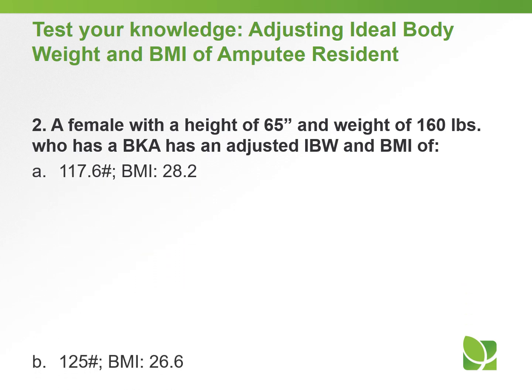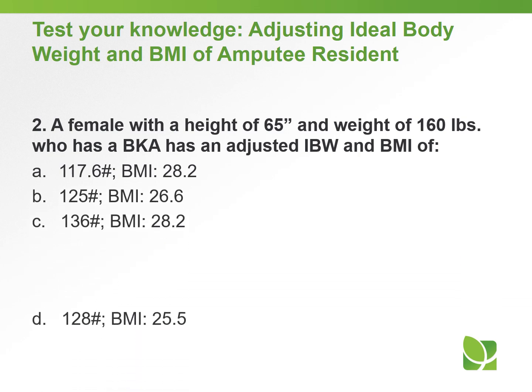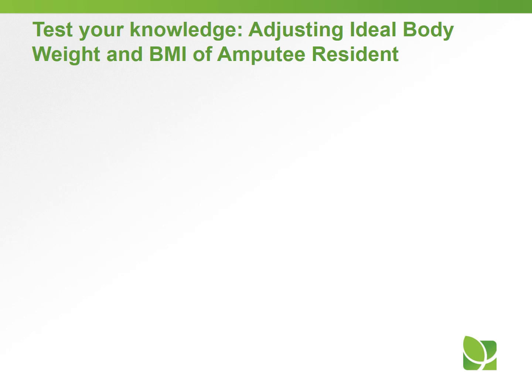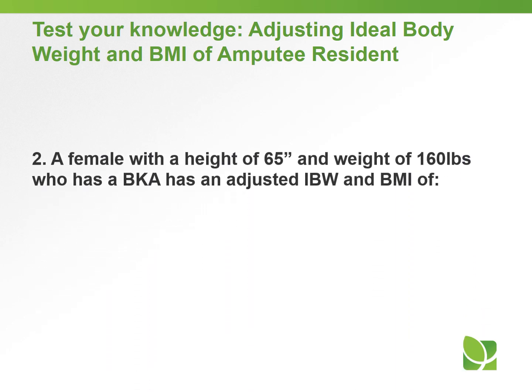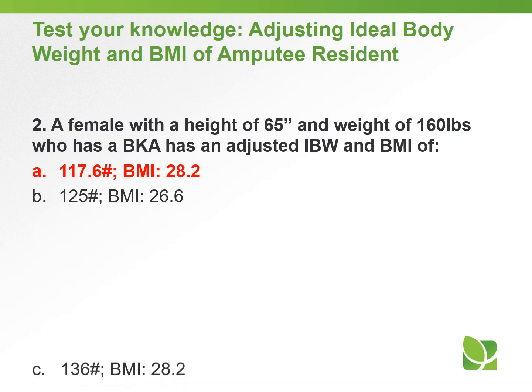Question number two: a female with a height of 65 inches and weight of 160 pounds who has a BKA — what is her adjusted ideal body weight and BMI? A) 117.6 pounds, BMI 28.2; B) 125 pounds, BMI 26.6; C) 136 pounds, BMI 28.2; or D) 128 pounds, BMI 25.5. The answer: adjusted ideal body weight and BMI is A) 117.6 pounds, BMI 28.2.